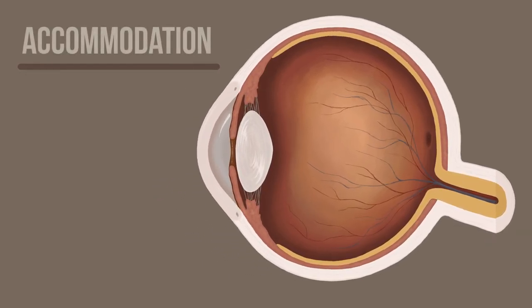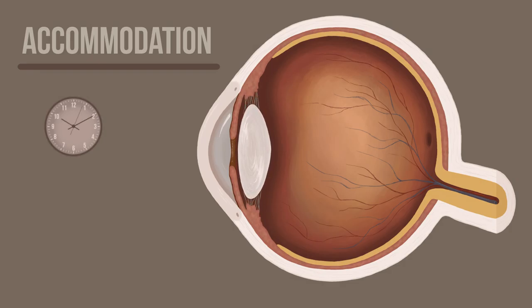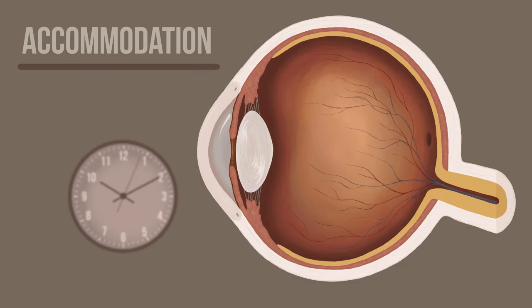Accommodation is the ability of the lens to change shape, allowing us to bring objects into focus. When viewing something from a distance, the ciliary body relaxes, causing the curvature of the lens to flatten. When viewing a close image, those muscles contract to thicken the lens. As we age, however, the lens hardens and the muscle fibers become less elastic, making it harder for the lens to accommodate. This causes objects at a close distance to appear blurry.